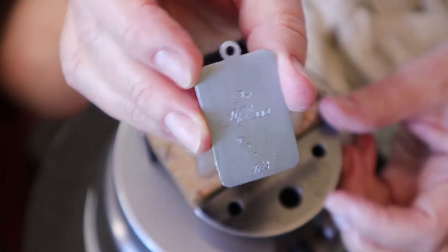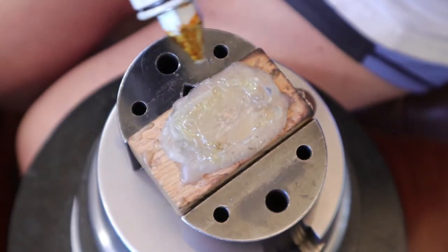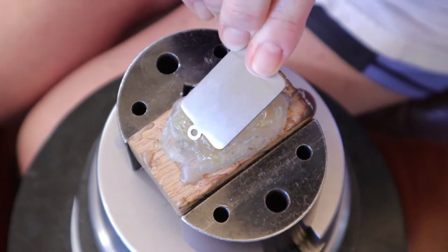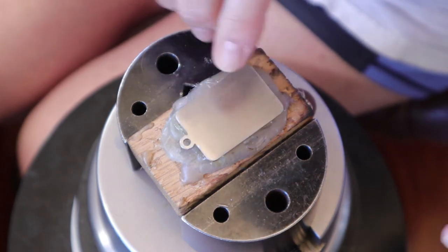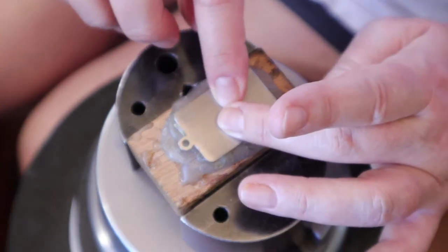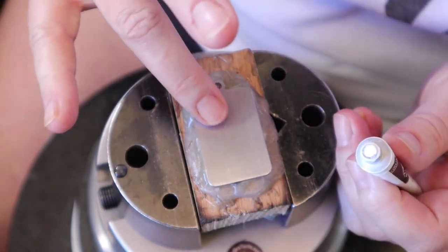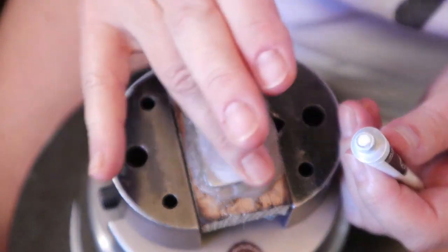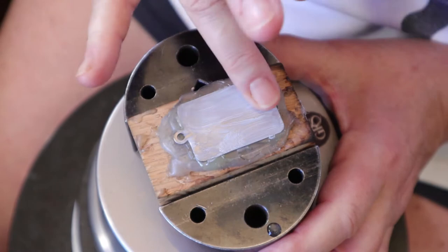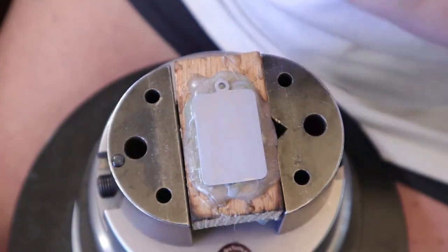Now, we're going to flip it over, and glue it down again so that we have the front of the pendant. Once again, we put some of the white watercolor paint on there, and smear it around until it's nice and smooth, and looks like a sheet of paper.